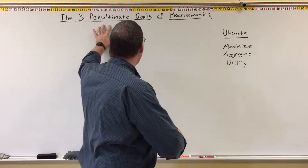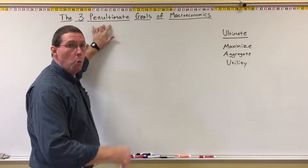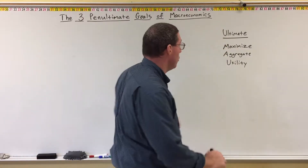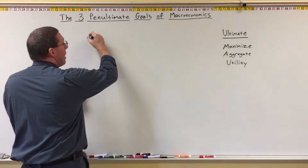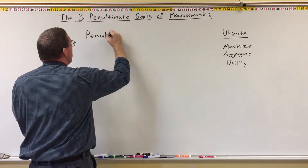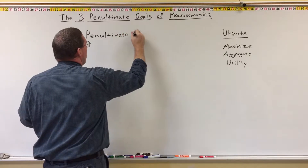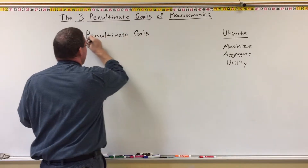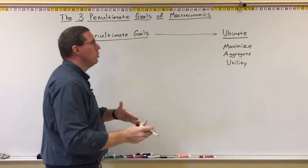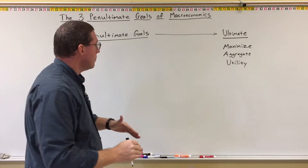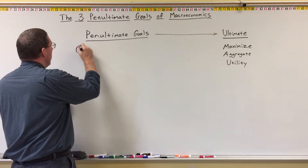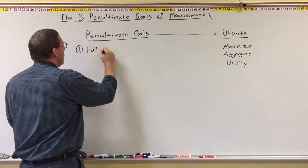So if we succeed in the penultimate goals, we assume that we are succeeding in the ultimate goal of maximizing aggregate utility. There's the ultimate goal, and then we have the penultimate goals of macroeconomics, which ultimately lead to the ultimate goal. The three penultimate goals of macroeconomics are: number one, full employment.